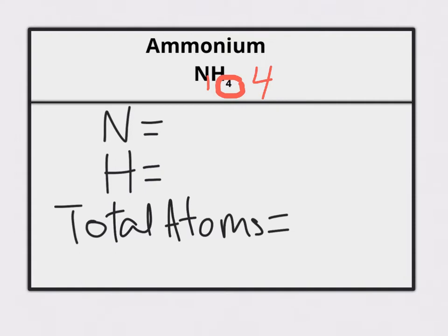In order to count the total number of atoms, all we have to do is add the individual atoms for each element. On nitrogen, there is no subscript, so it's 1. And hydrogen has 4 atoms, so it's a 4.